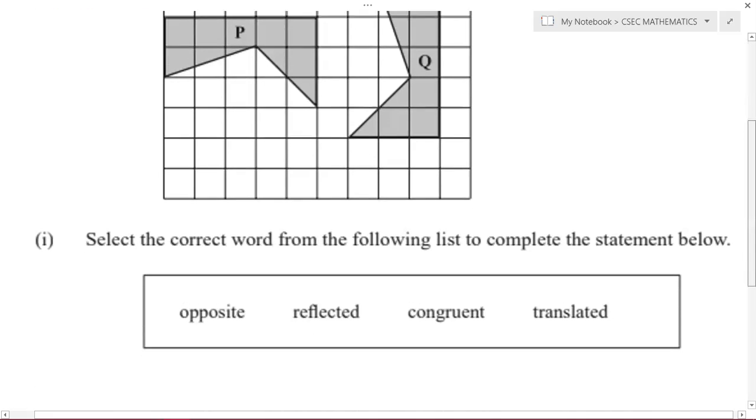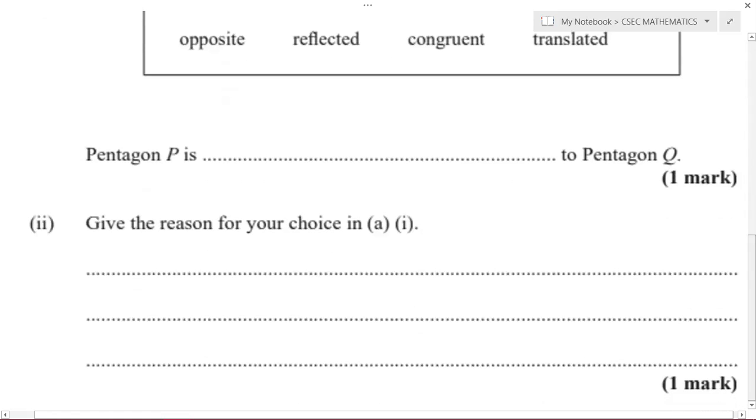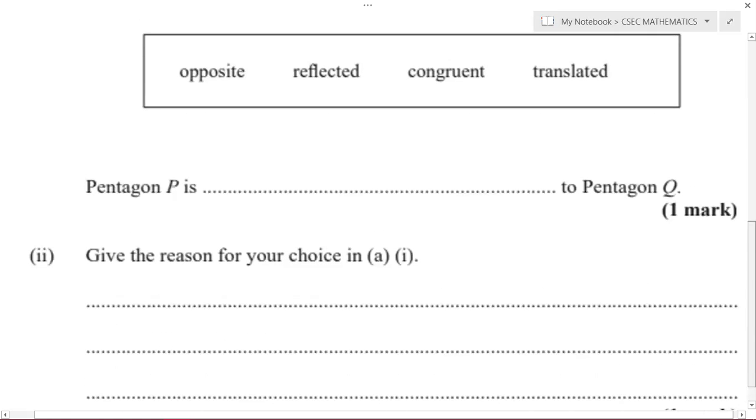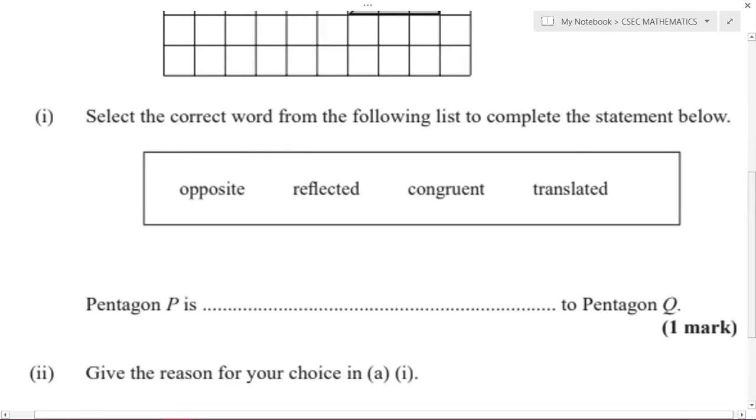They ask us some questions here. The first part of the question says select the correct word from the following list to complete the statement below. Pentagon P is dash to Pentagon Q, and that's one mark. The second part of the question says give the reason for your choice above, and that's also one mark. This is a two marks question in total.